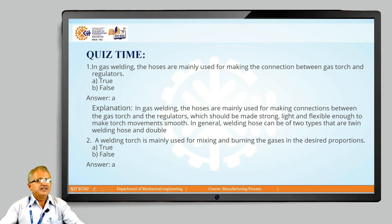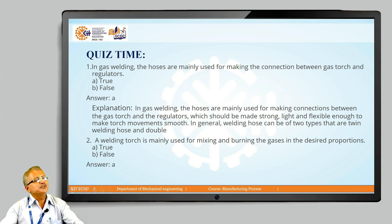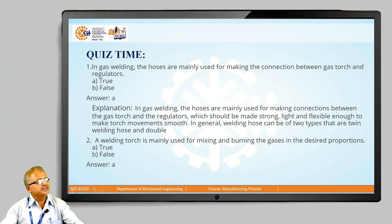Quiz time: The first question — in gas welding, hoses are mainly used for making the connection between the gas torch and regulator. True or false? The answer is true, because hoses make the connection between the gas torch and the regulator. The second question — a welding torch is mainly used for mixing and burning the gases in desired proportion. The answer is also true, as the proper mixture of oxygen plus fuel gas produces the desired flame for joining.